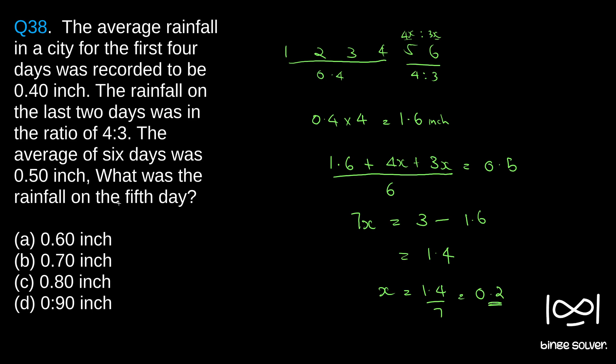The question is what was the rainfall on the fifth day. The day we assumed the rainfall was 4x, so 4 into 0.2 which is 0.8. This is our answer. So the solution to question 38 is C, 0.8 inch.